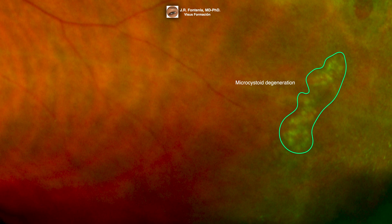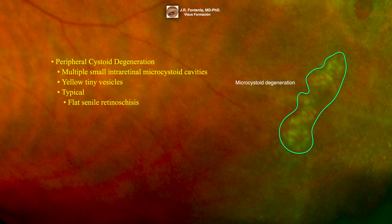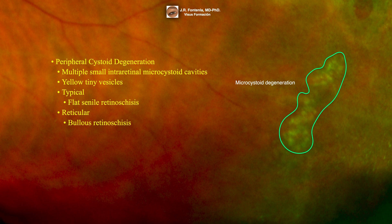Here we can see a microcystoid degeneration. Peripheral cystoid degeneration is defined as multiple small intra-retinal microcystoid cavities, most frequently seen in the temporal peripheral retina. Characteristically, they are yellow tiny vesicles with blurred borders on a grey background. The typical form occurs in adults and may be complicated by fusion of cysts, development of cavities in the outer plexiform layer, and flat senile retinoschisis. The reticular form occurs in 18% of adults and may be complicated by bullous retinoschisis with cavities found in the retinal nerve fiber layer. This form is almost always found posterior to typical peripheral cystoid degeneration and tends to follow the retinal vessels.